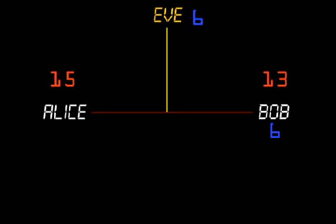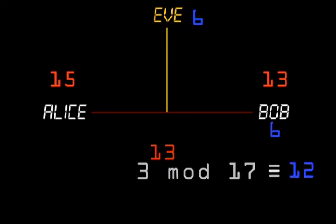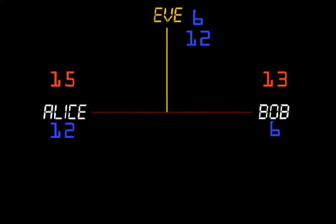Then, Bob selects his private random number, say 13, and calculates 3 to the power 13, mod 17, and sends this result publicly to Alice.